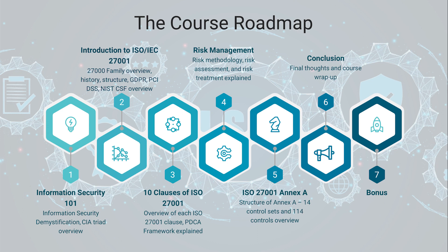Section number three is called Introduction to ISO/IEC 27001. In this section, we will start to jump into the main topic of this course — the 27001 standard. We will talk about the whole 27000 family of standards, its history and structure, but we will also touch on other frameworks and regulations like the famous GDPR, PCI DSS, and NIST CSF. I won't demystify all the acronyms right now to spoil the fun, but you will see how it is all very connected to each other. The analogy is almost like when you know and learn one programming language, then it is far easier to learn others.